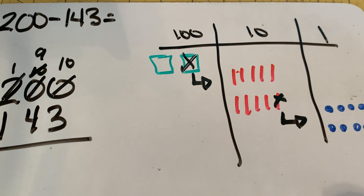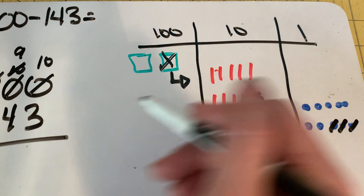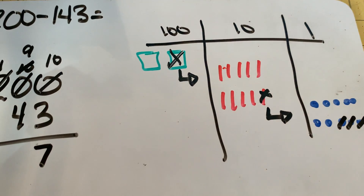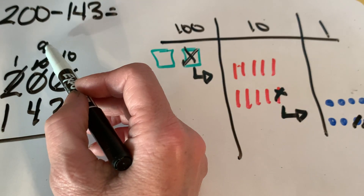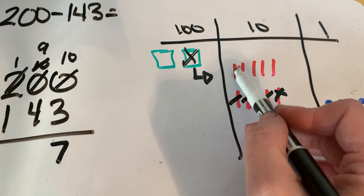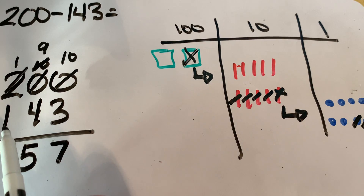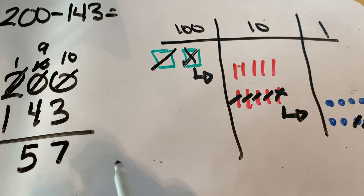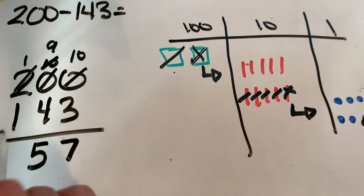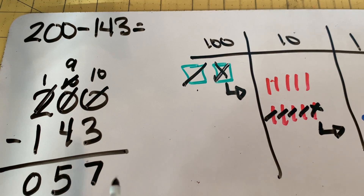Now I have enough to subtract some ones. Let's take our three ones off: one, two, three — that leaves us with seven ones. Let's look at our tens: we had nine tens, we take off four — one, two, three, four — so nine minus four leaves us with five tens. We had one hundred and we've got to take off one hundred, so one hundred minus one hundred is zero. We don't have to write the zero, but if it helps you remember that place value, you can. So two hundred minus one hundred forty-three is fifty-seven.